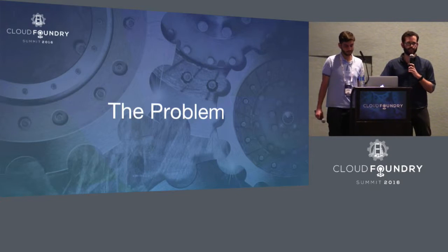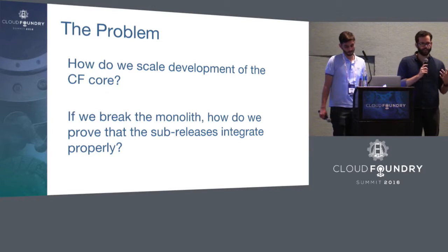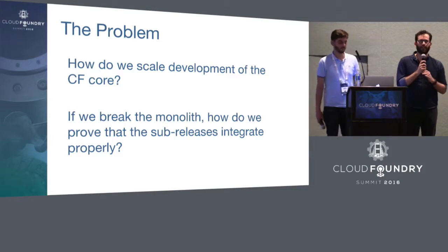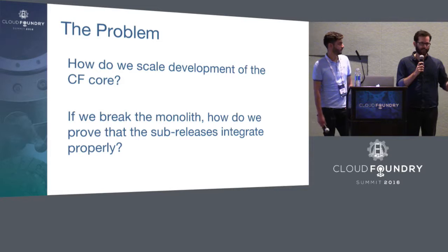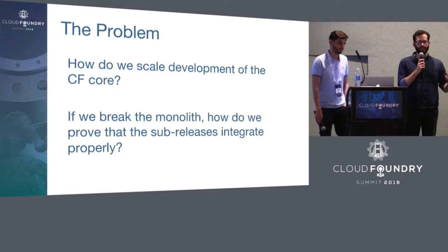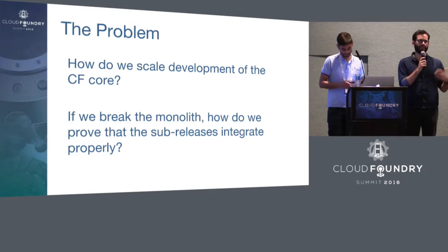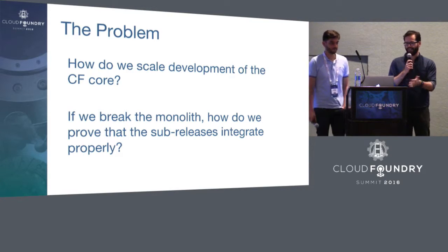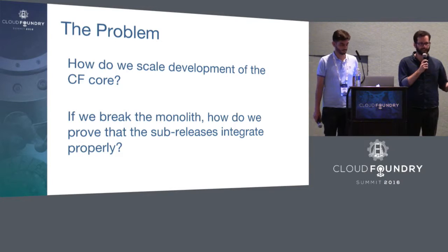This brings us to the core problem: how do we scale development of the CF core? If we want to add new subsystems and teams to build features or fix bugs in the Cloud Foundry ecosystem, how do we scale that effectively? And if the answer is to break the monolith, how can we still prove that all the new releases work properly together — preserving the integration quality assurance we previously got from a single pipeline?